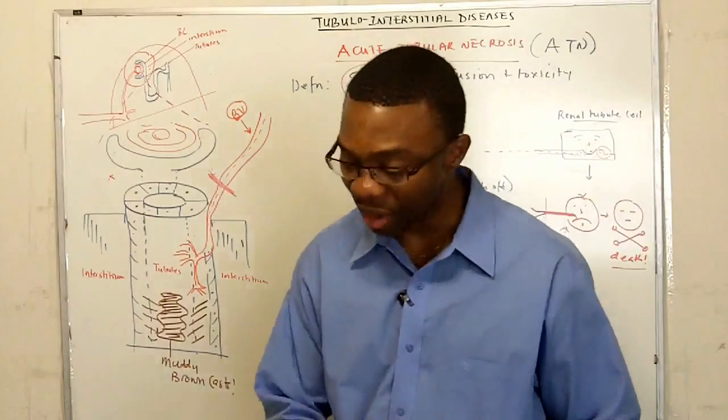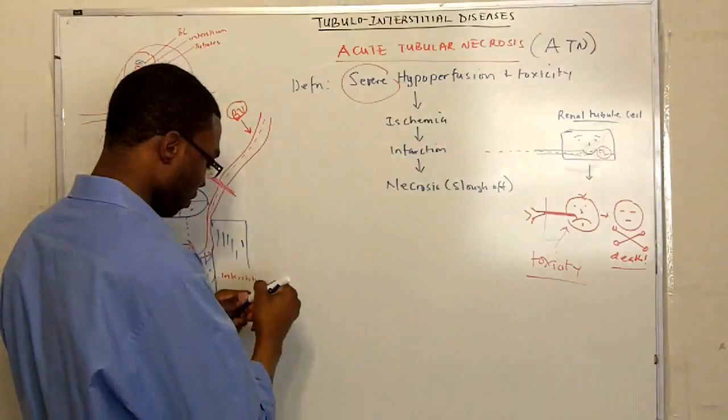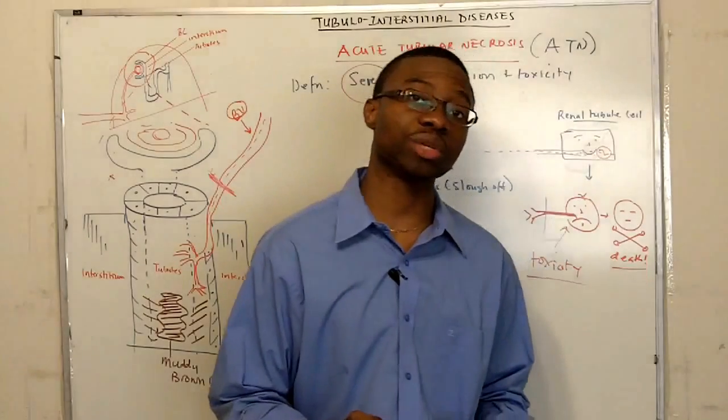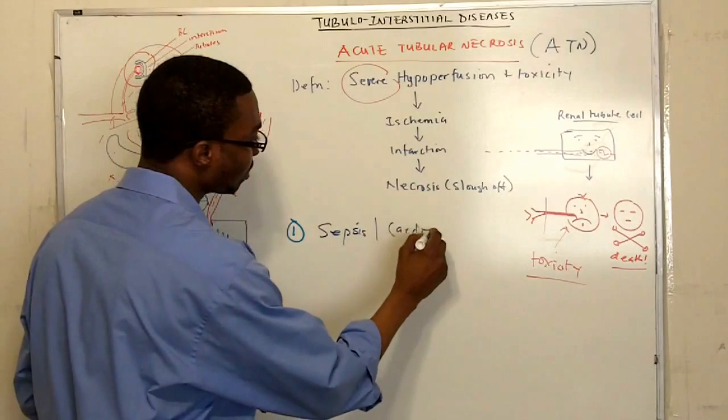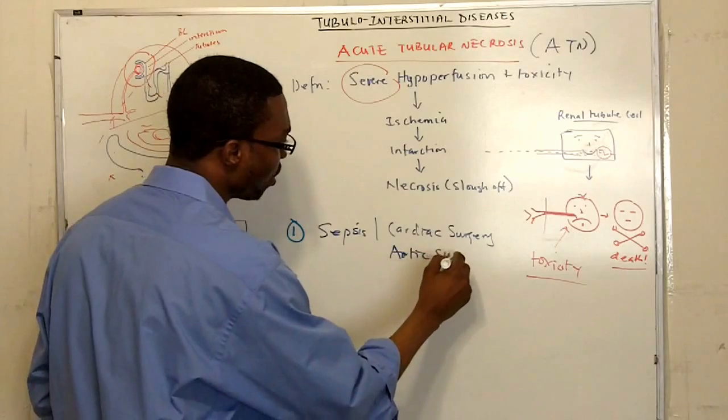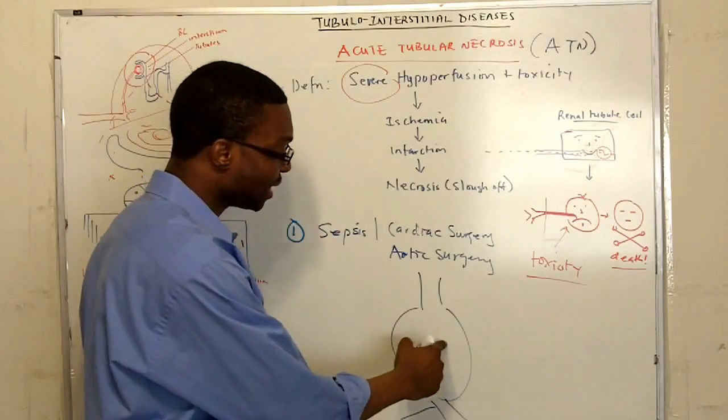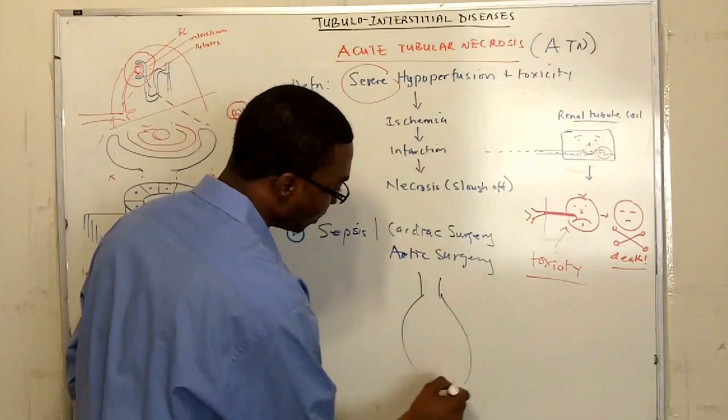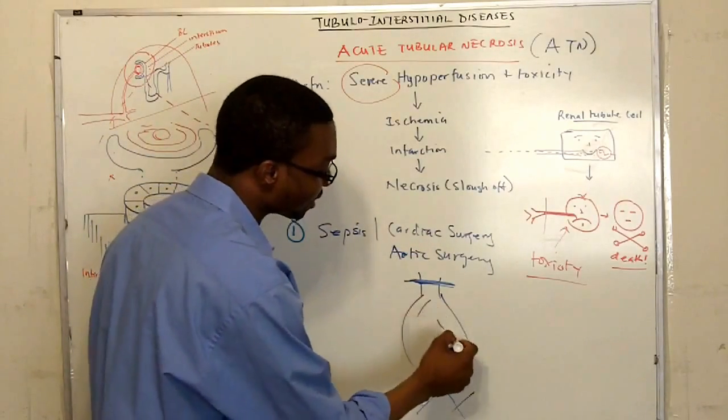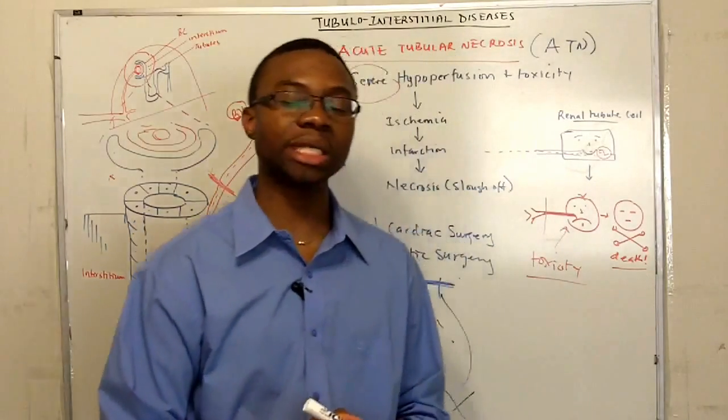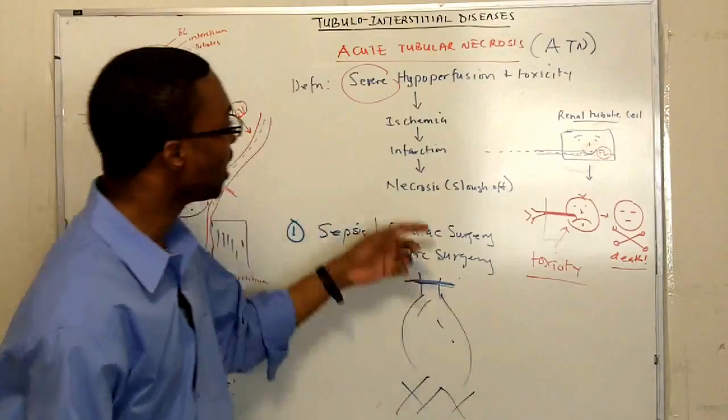What can cause severe hyperperfusion to the kidneys? Number one, if you just have cardiac surgery or you have sepsis, or aortic surgery. What kind of aortic surgery? If you had a big aortic aneurysm rupture and you had to replace this, during the surgery, they have to clamp off the top of the aorta and the bottom so they can fix this area. During that period of time, you might get decreased perfusion to your kidneys. That is some bad news.